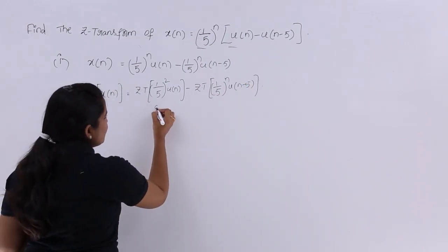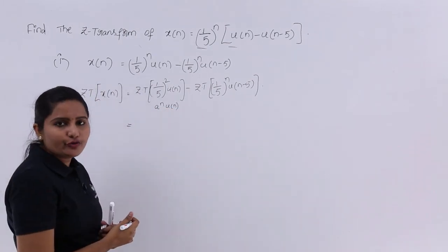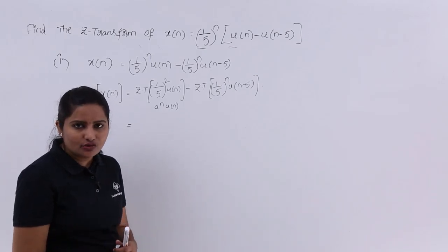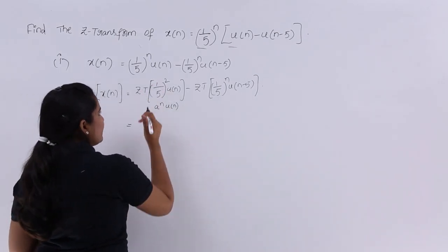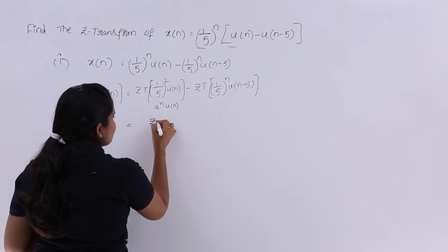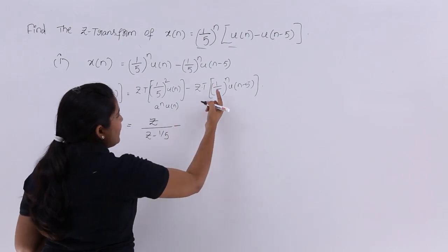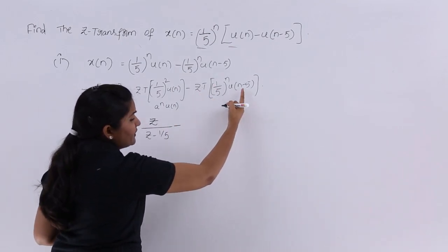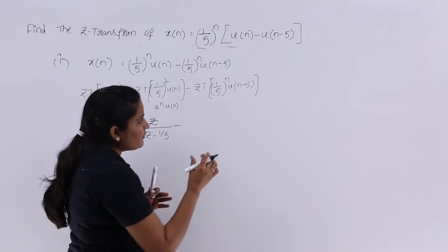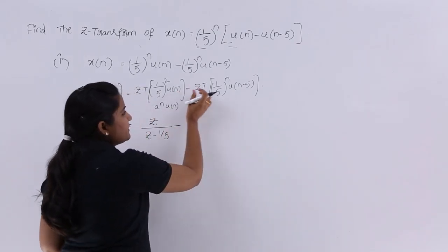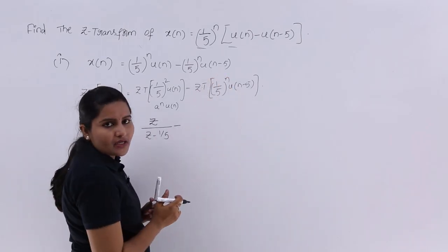The first term is in the form a^n · u(n). The Z transform of a^n · u(n) equals Z/(Z - a). Here, in place of a we have 1/5, so the Z transform of the first term is Z/(Z - 1/5). For the second term, we also have the same form but with some shift.